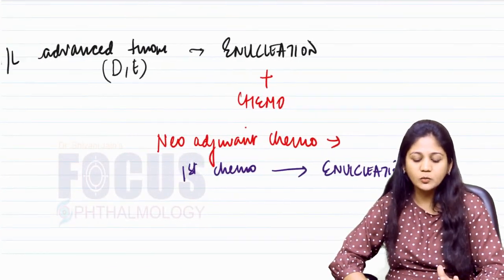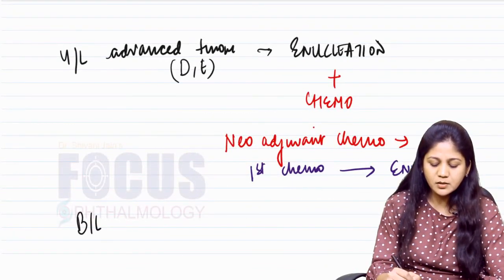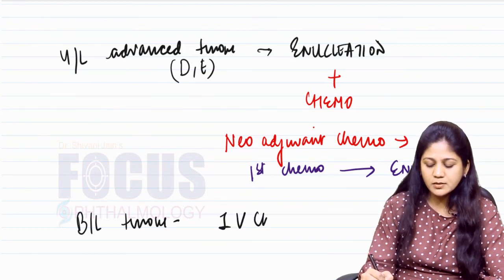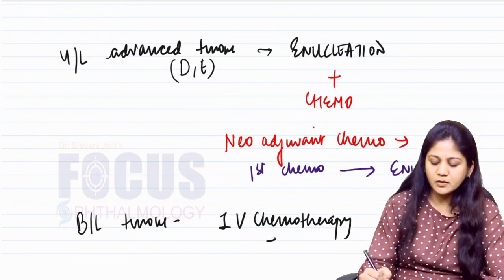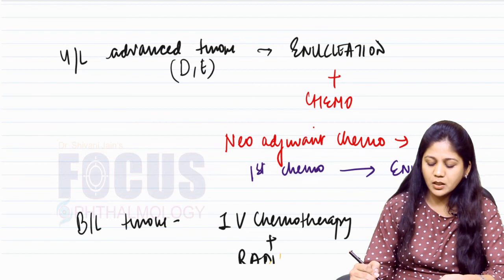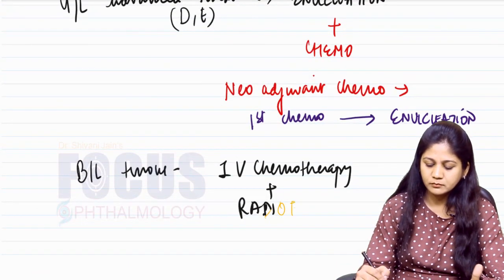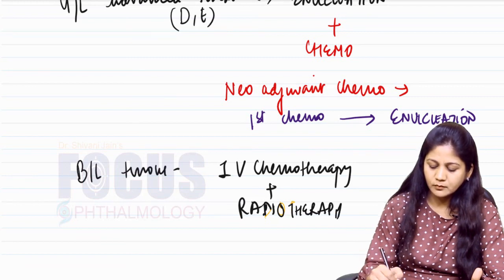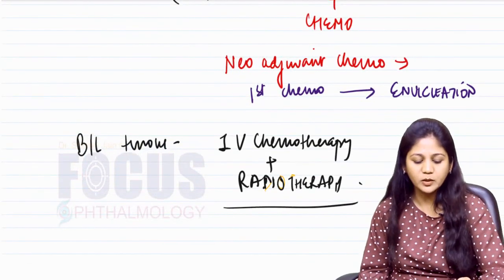For bilateral tumors, the mainstay of treatment is intravenous chemotherapy. Radiation therapy can also be given, but chemotherapy remains the primary treatment. That concludes the discussion on retinoblastoma.